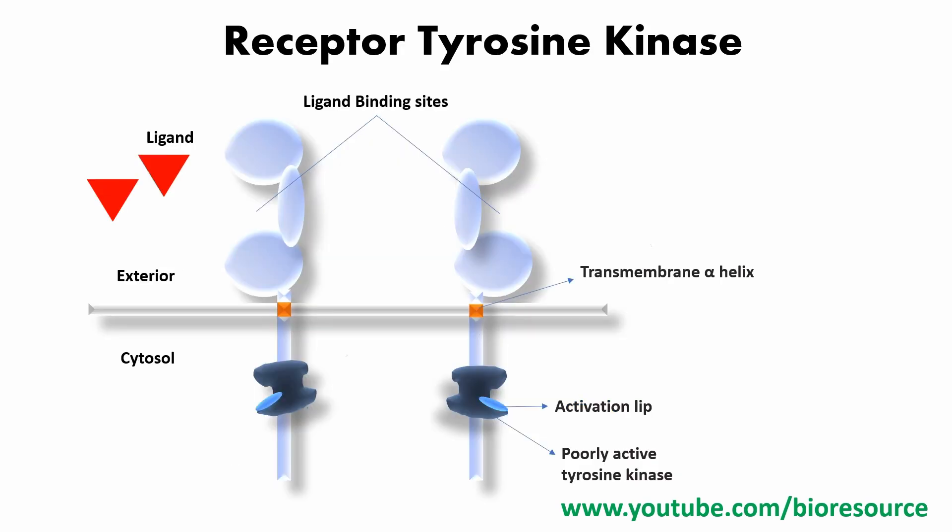Coming to the structure of receptor tyrosine kinase — as we have seen earlier, receptor tyrosine kinases have ligand binding sites, the transmembrane helix, and the intracellular region. The exterior part has the ligand binding domain, followed by a transmembrane region, and the regulatory region where the tyrosine kinase activity regions are present.